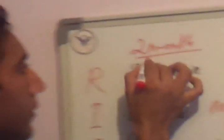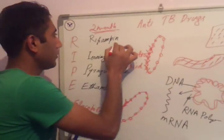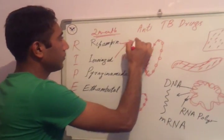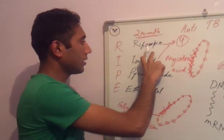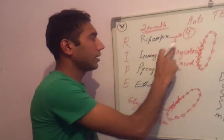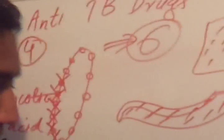Clinical use: all four drugs are used in combination for the first two months of treatment. After two months, only isoniazid and rifampin are used for the next four months. So overall treatment takes about six months.